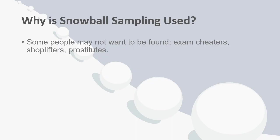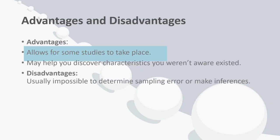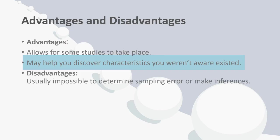candidates might be wary of coming forward because of possible ramifications. However, other people in the study would likely know others in the same situation and could inform them about the benefits of the study and reassure them of confidentiality. A big advantage is it allows for studies to take place when otherwise it might be impossible to conduct because of a lack of participants. It might also help you discover characteristics about a population that you weren't even aware existed.